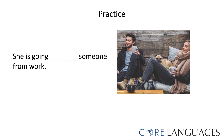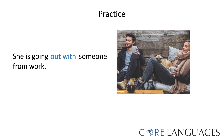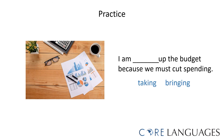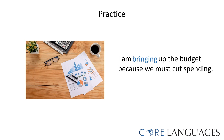She is going out with someone from work, or she is going with someone from work? While 'she is going with someone from work' is grammatically correct, to be going out with someone means to date someone or to be romantically involved, so the correct sentence is: she is going out with someone from work. Next: 'I am taking up the budget' or 'I am bringing up the budget, because we must cut spending.' To bring up means to mention in a conversation, so the correct sentence is: I am bringing up the budget, because we must cut spending.